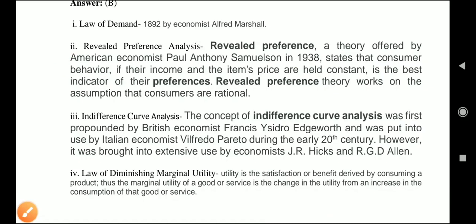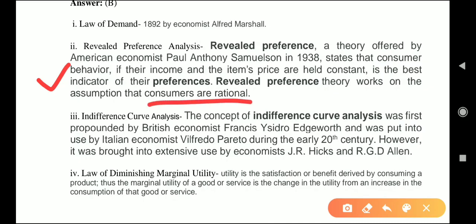The revealed preference theory assumes that the consumer is rational — a rational consumer wants to maximize their satisfaction, and a rational producer wants to maximize profit. Revealed preference theory was given by Paul Samuelson in 1938. Next, indifference curve analysis was first propounded by British economist Edgeworth and put into use by Italian economist Vilfredo Pareto in the early 20th century.